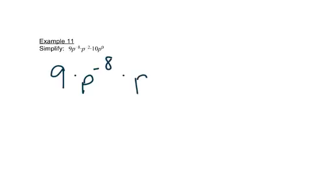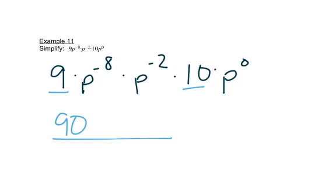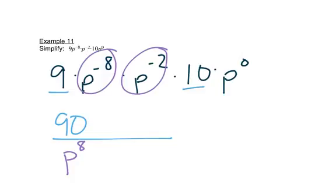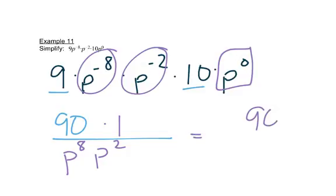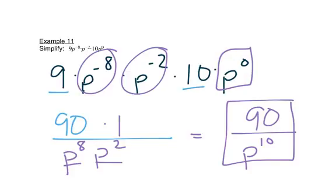One more. Again, it helps to break it apart into separate pieces. Let's do 9 times 10 first, which gives us 90. We write our fraction bar: this term has a negative exponent so it goes on the bottom, this term has a negative exponent so it goes on the bottom, and this is to the 0 power which means it's really just 1. So 90 times 1 is 90. This gives 8 p's and 2 more p's, which gives 10 p's.